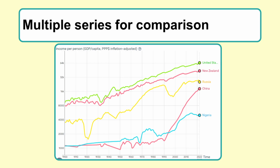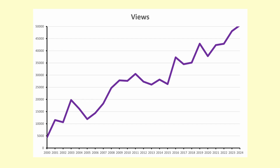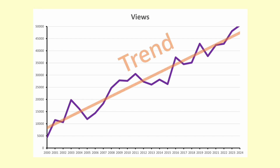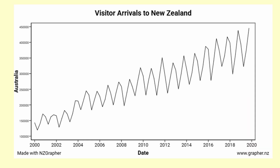The overall behaviour of the series is called the trend. We fit a trend line through the series so we can see better what is going on without the variation or noise. This graph shows the trend line for visitor arrivals to New Zealand from Australia from 2000 to 2020.